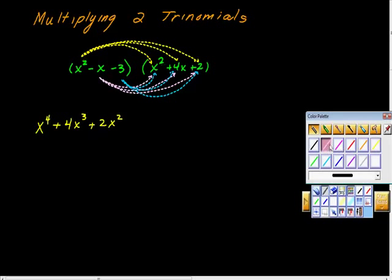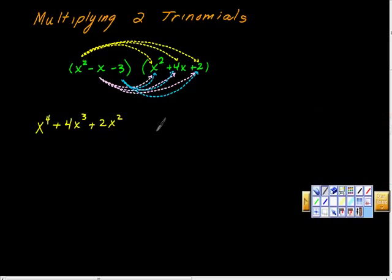We move over to the color pink. So what are we multiplying here? The negative x. Negative x times x squared—negative x to the third power. And then, following the diagram, negative 4x squared. Finally, negative 2x. Then we'll go to the blue.